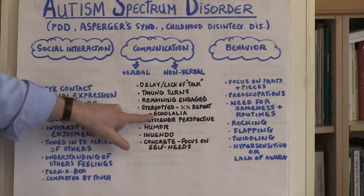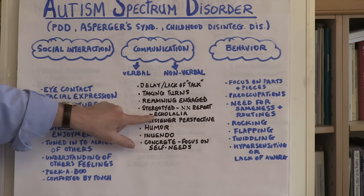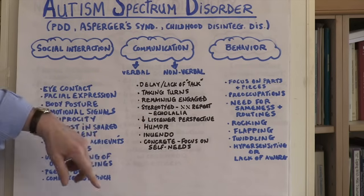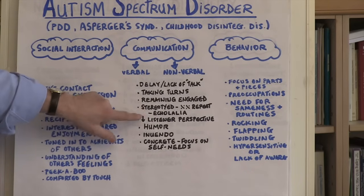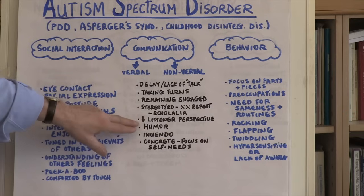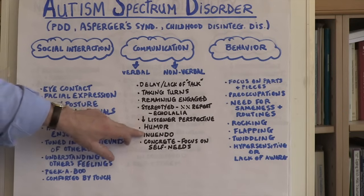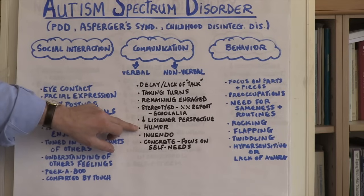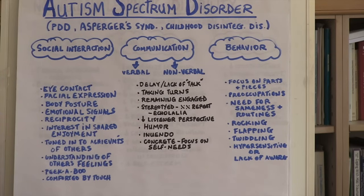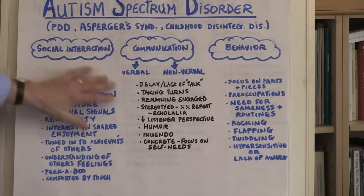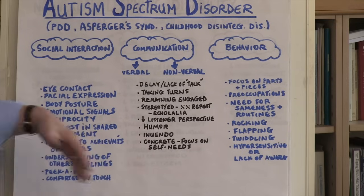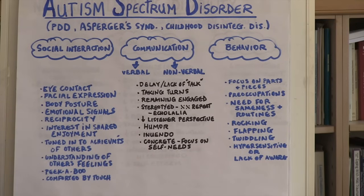They may also be echolalic — they may repeat something that someone else says, echoing the actual words of another person. Again, in the communication domain, individuals with autism have difficulty taking the listener perspective. They have difficulty understanding and responding to humor. Innuendo is very difficult for them. And again, they tend to be concrete and focus on their self-needs as opposed to the needs of others around them.